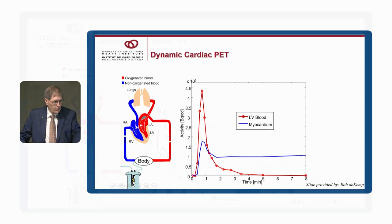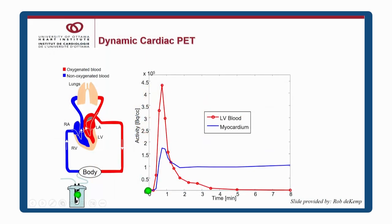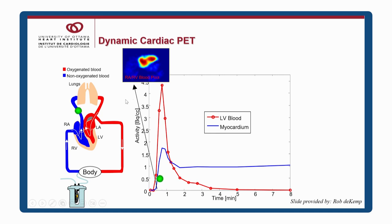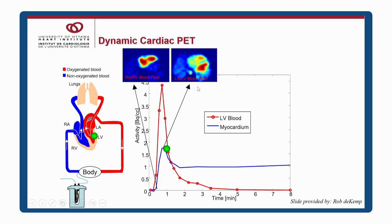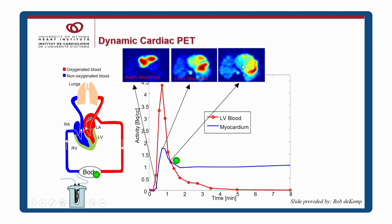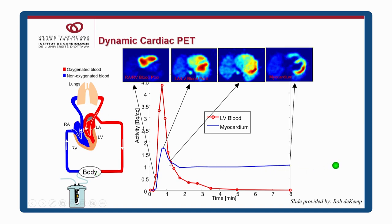This is a rubidium generator. The green dot indicates rubidium passing into the right ventricle, through the right ventricular blood pool, through the lungs, and into the left ventricle. We see the left ventricular blood pool, then gradual uptake by the myocardium and washout from the blood. The myocardial time-activity curve is shown in blue and the blood pool in red. This type of late uptake image is what static imaging with SPECT and PET uses.